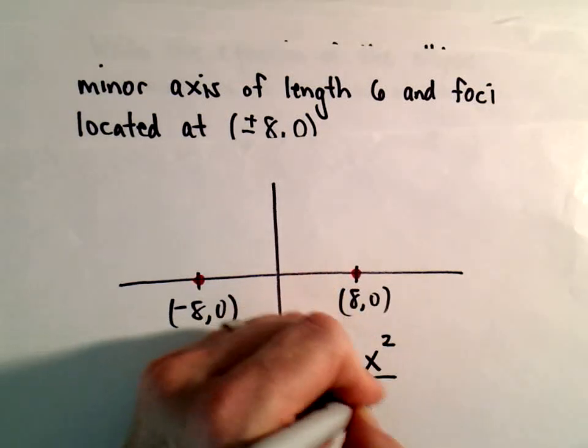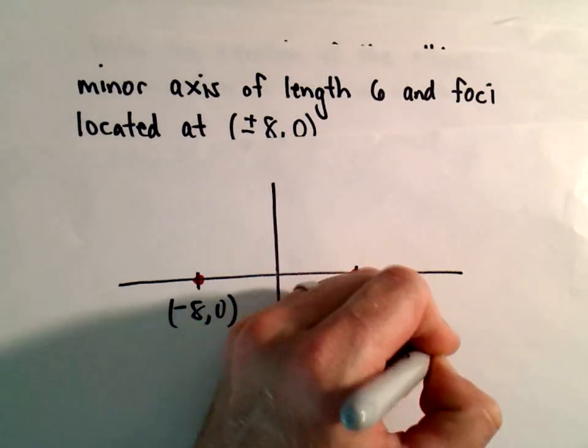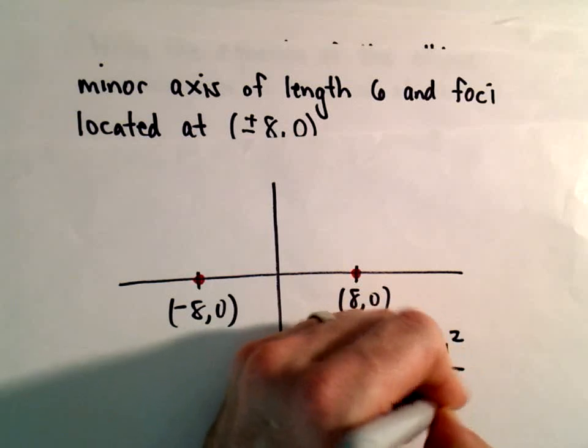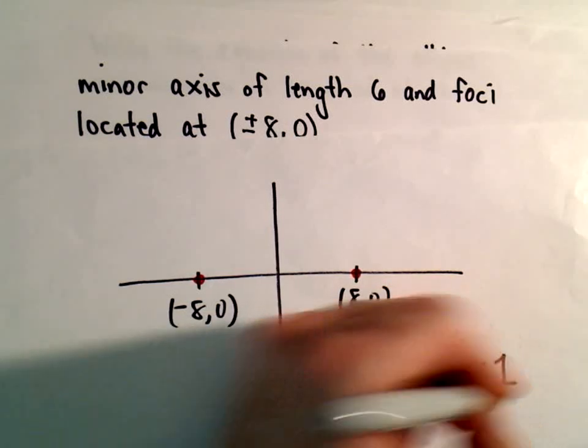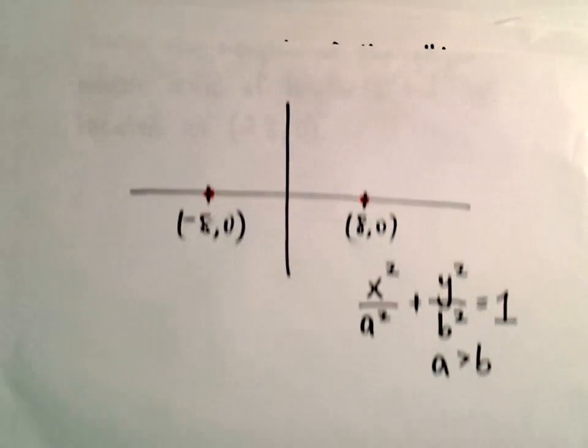So that tells me it's of the form x² over a² plus y² over b² equals 1, where a is greater than b.